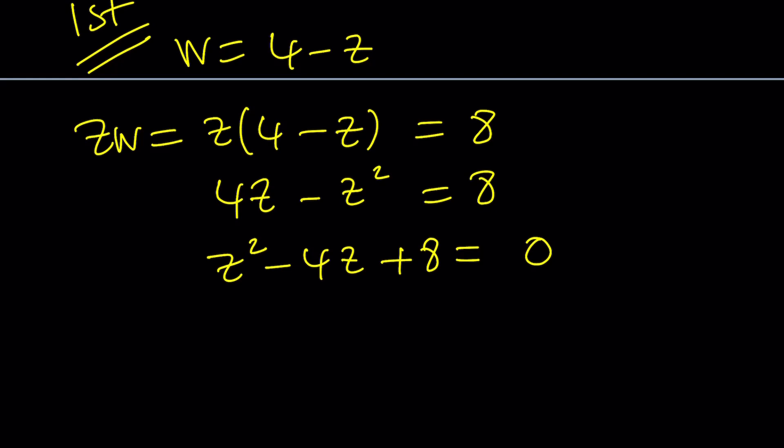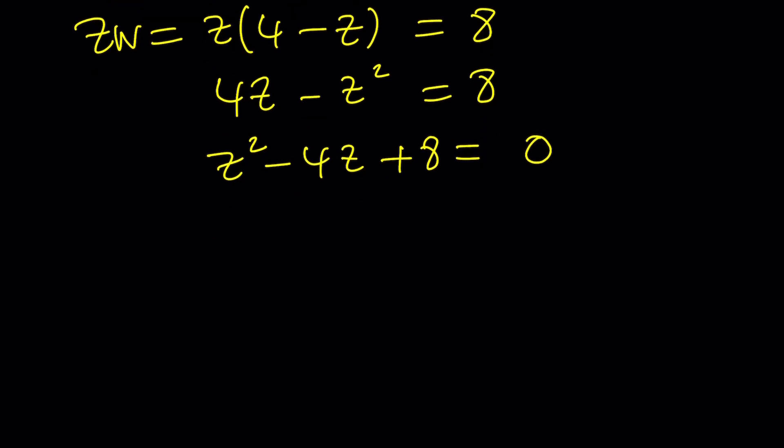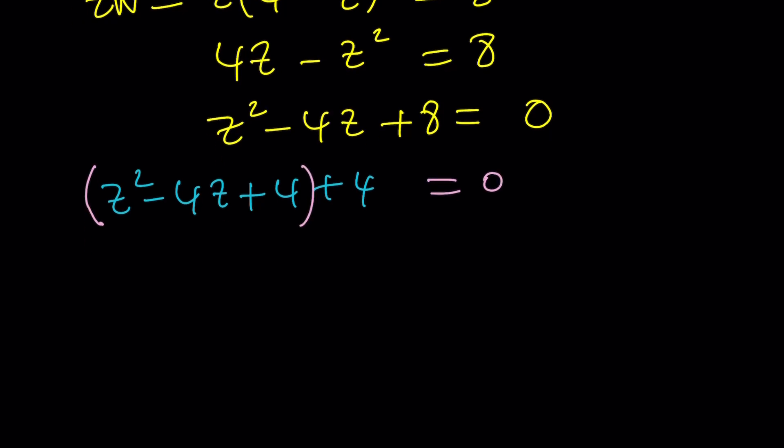But quadratic formula and completing the square are perfect. Now let's go ahead and use completing the square because quadratic formula is well known and it's pretty easy. Very straightforward. Let's go ahead and split the 8 into a 4 plus 4 because now this part is a perfect square. And that's just perfect. And let's go ahead and do this.